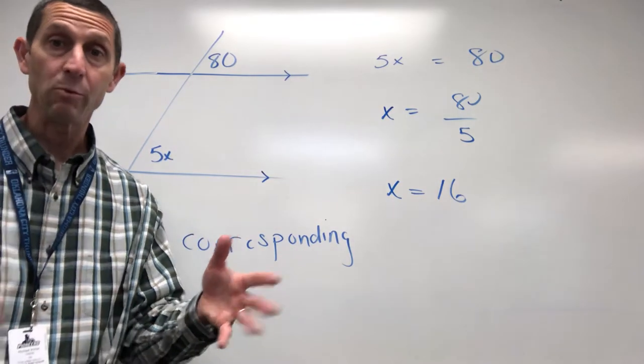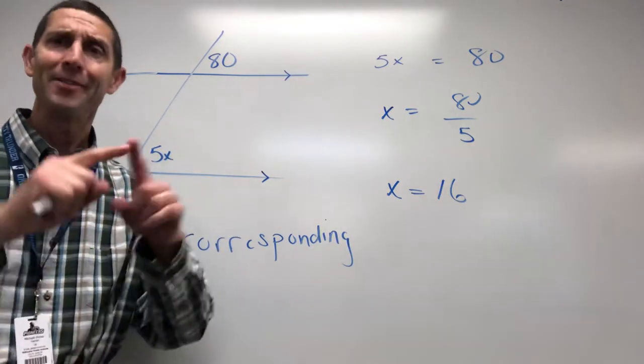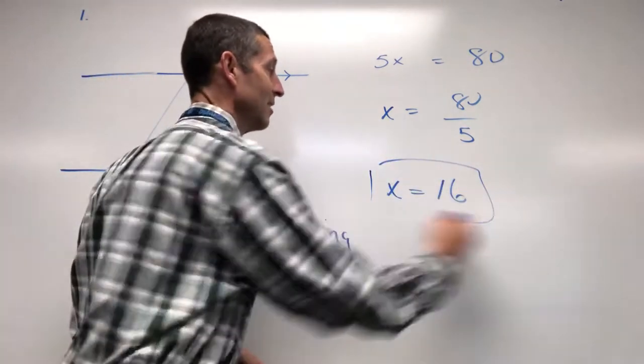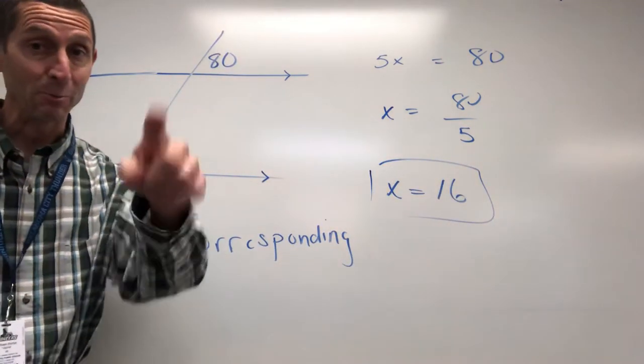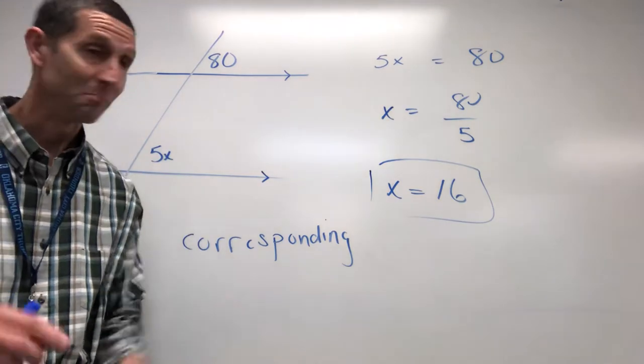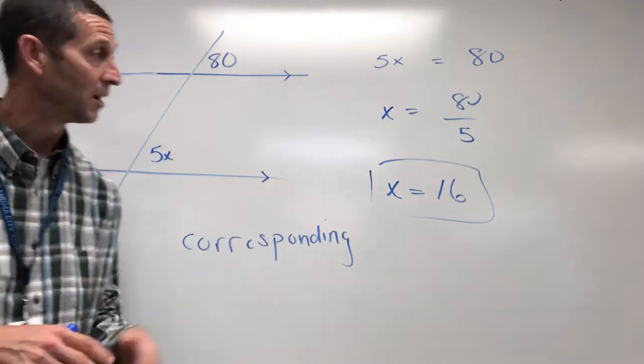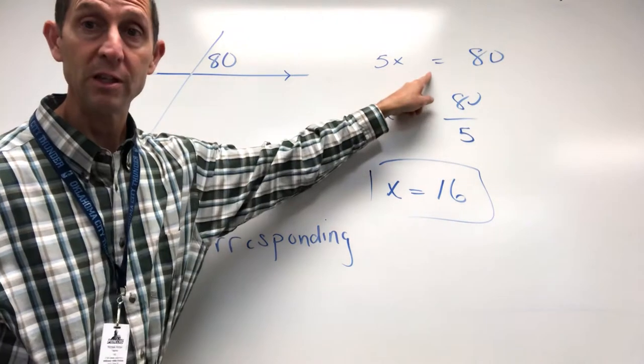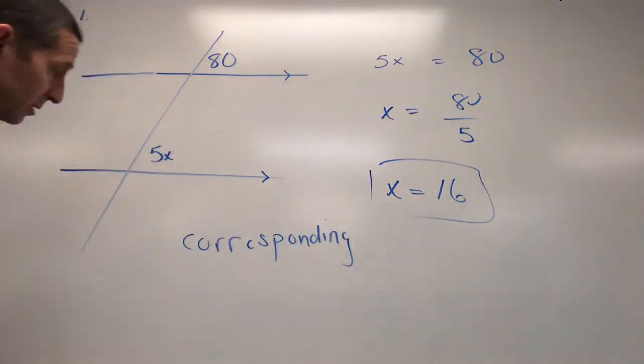Now on this assignment, when we jump these problems out of the book, they don't want you to plug it back in. They just say, hey, just solve for x and call it good. Which is a little unusual for us because we were always plugging things back in. But we'll work with them today. Alright, so first example, corresponding angles set equal to each other. Solve for x. Let's run another one.